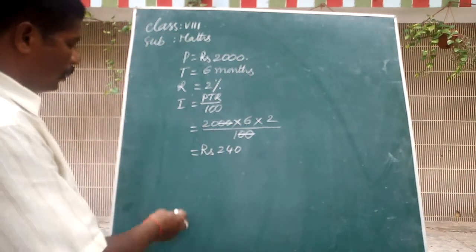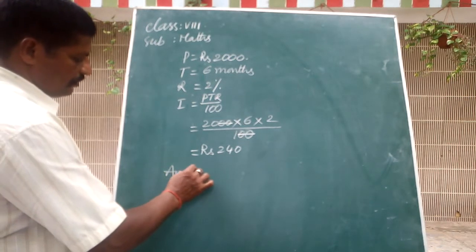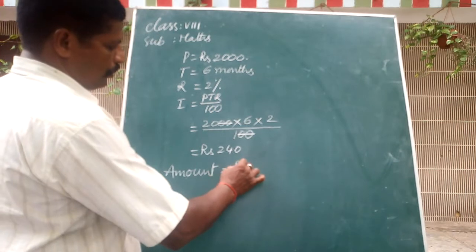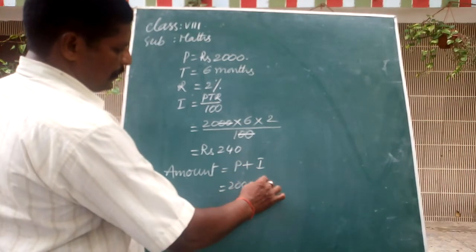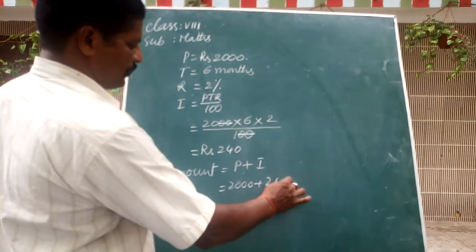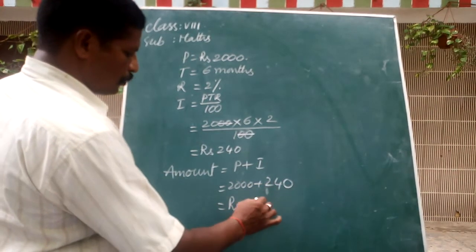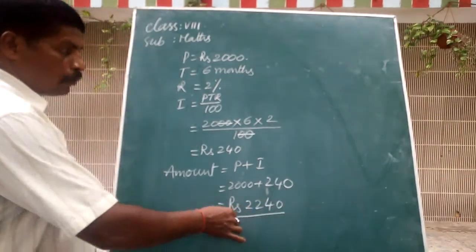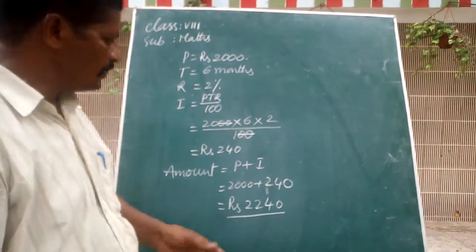So the total amount A equals P plus I, which is 2,000 plus 240, equal to 2,240 rupees. This is the total amount you have to pay. There are many types of rate of interest — 2%, 1%, 1.5%, 0.75% — but the formula remains I equals PTR by 100.